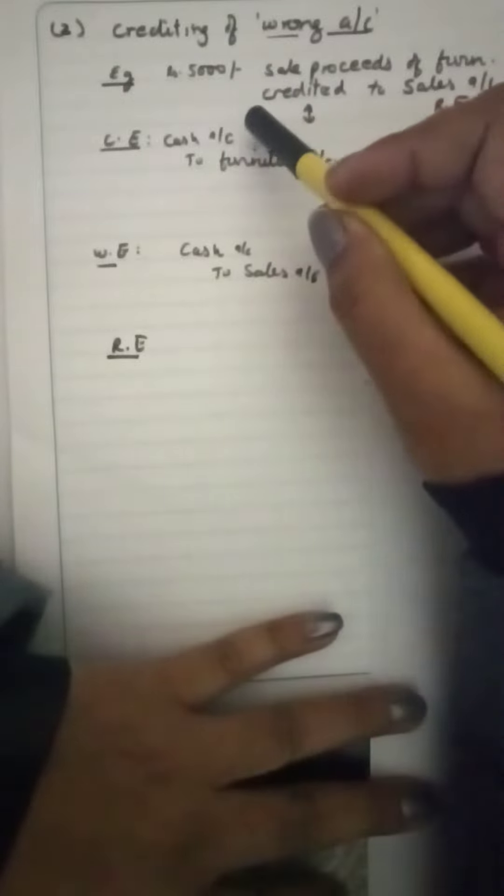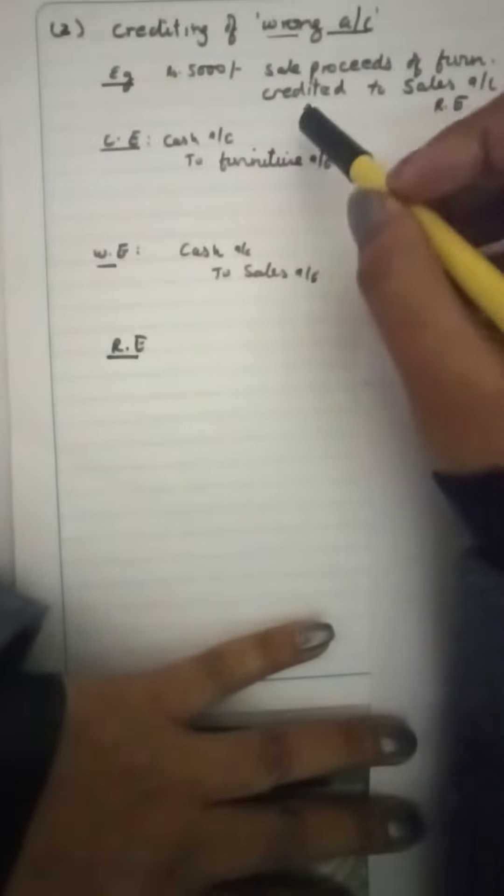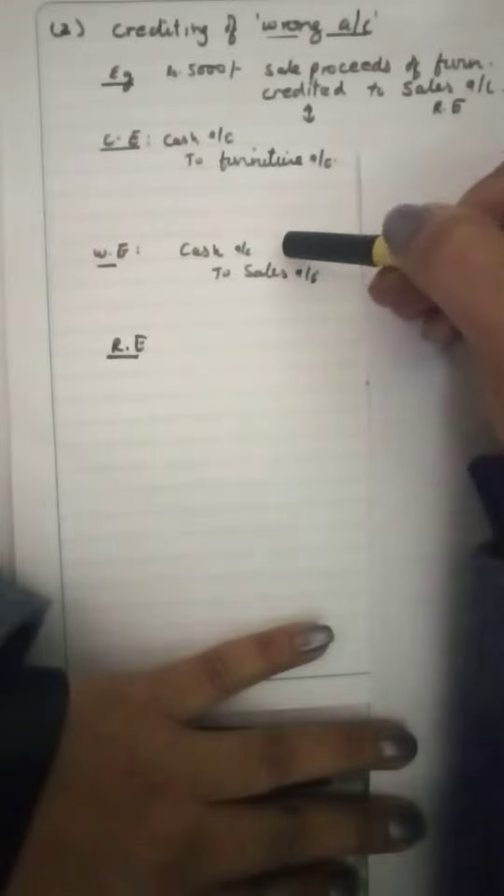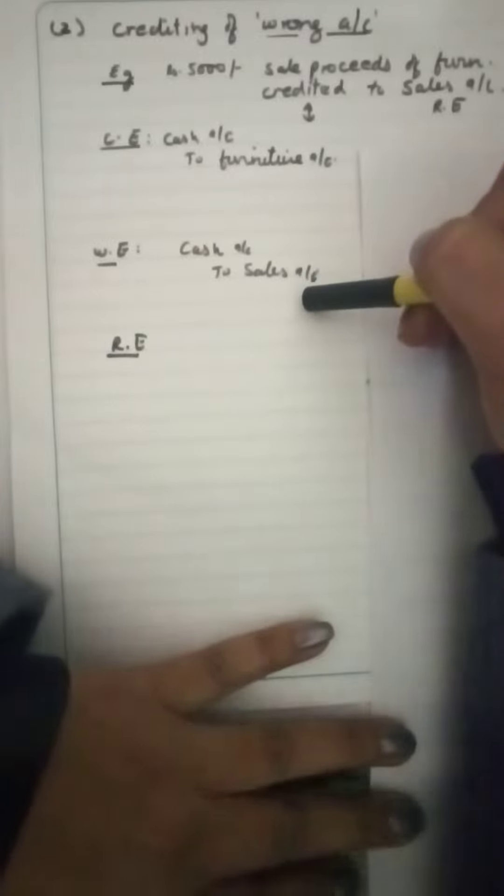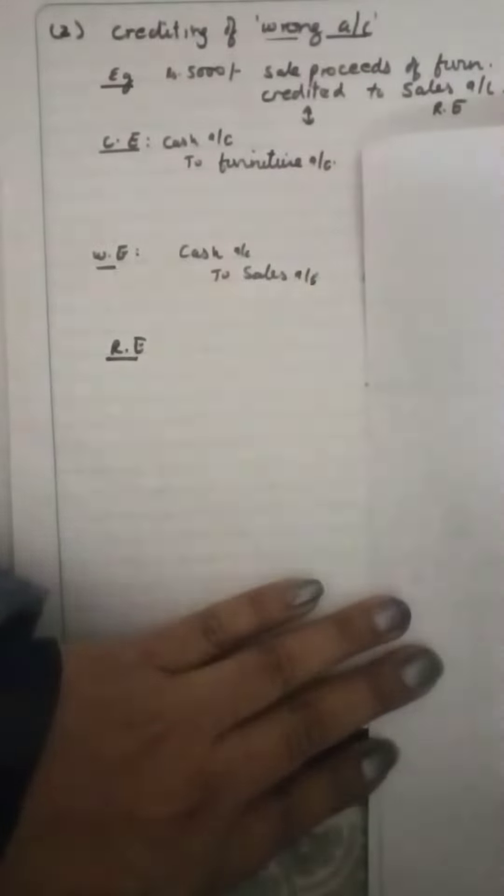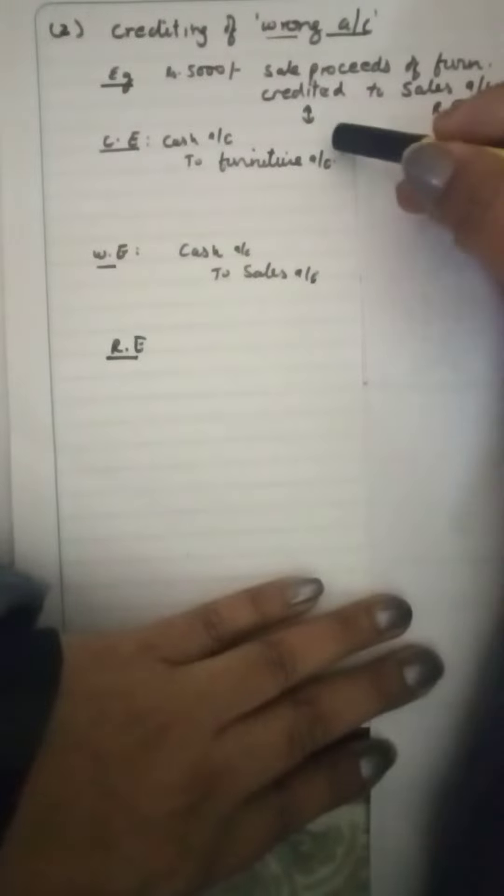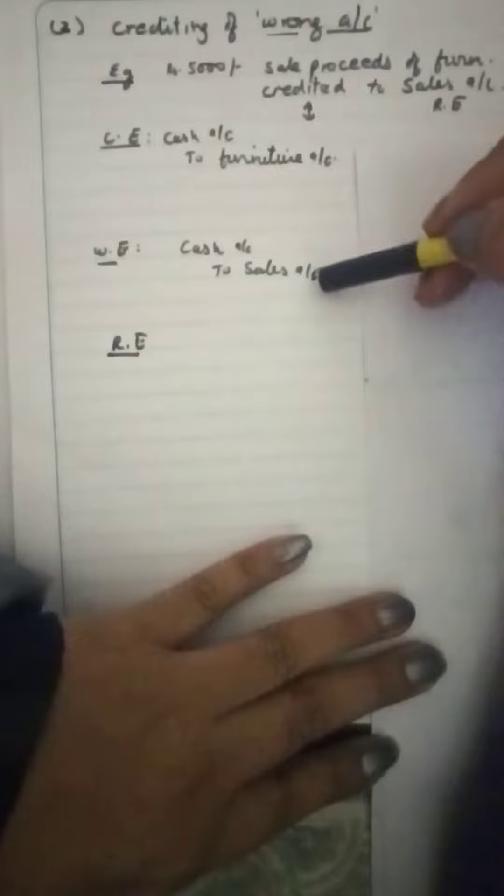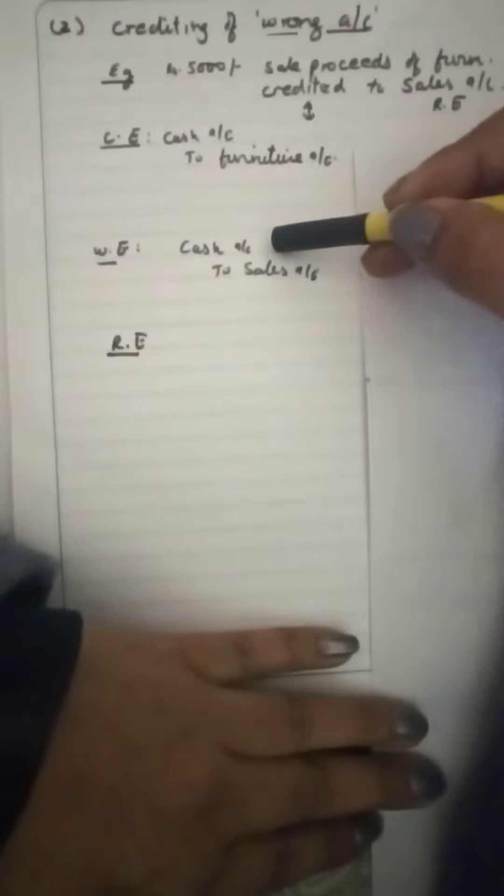What should be the correct entry? Cash to furniture. But what has happened is it is credited to sales account. What has been done? Crediting to sales account, cash to sales. It has been done cash to sales. What had to be done? Cash to furniture. Wrongly, in place of furniture, we assumed it to be sales. The wrong entry is cash to sales.